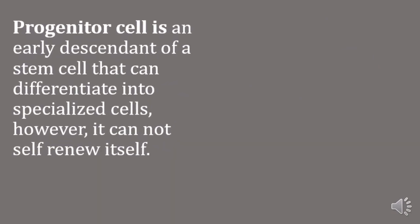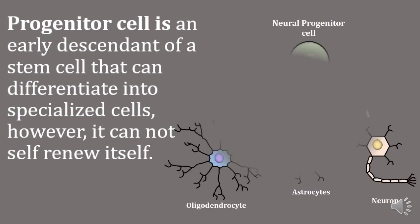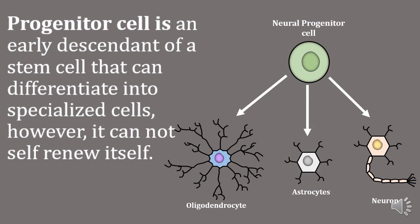A progenitor cell is an early descendant of a stem cell that can differentiate into specialized cells. However, it cannot self-renew itself. A neural progenitor cell can differentiate into a neuron, an astrocyte, or an oligodendrocyte.